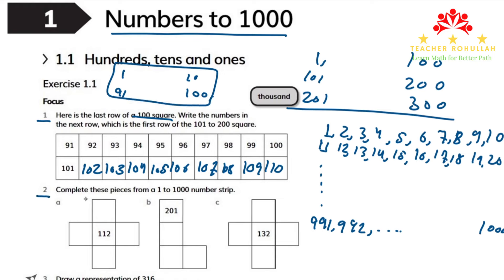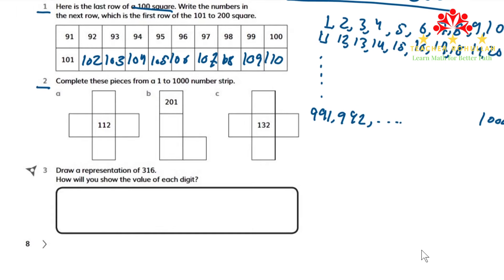In question number 2, it says, complete these pieces from a 1 to 1000 number strip. So these two, let me scroll a bit down. To complete these three pieces, we will use this 1 to 1000 number strip.